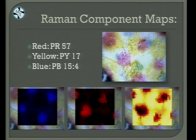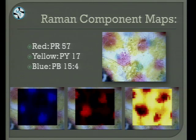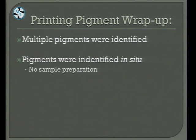Moving on to Raman component maps — this is a map of the four-color printing inks. The blue is on the left showing the map of where the blue pigments are, the red is in the middle, and the green is on the right. Even though they are overlapping, we're able to map the areas where these pigments are in that designated area. To wrap up printing pigments: multiple pigments were identified, even pigments that weren't the standard pigments. The pigments were identified in situ with no sample preparation — we simply placed the sample on polished aluminum slides and looked at them under the Raman microscope.